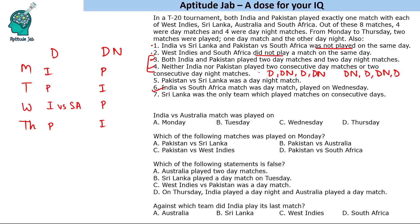Since West Indies cannot play on the same day as South Africa, and Sri Lanka is the only team playing on consecutive days, South Africa cannot occupy certain slots. Working through these constraints, West Indies will play on Tuesday and Thursday, while South Africa plays on Monday and Wednesday. Since South Africa already played against India on Wednesday, Monday's match will be Pakistan versus South Africa.